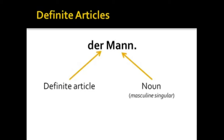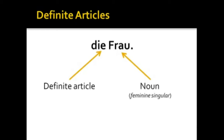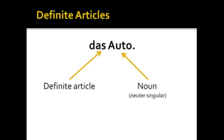We have the definite article 'der', which indicates the masculine gender of the noun. Since it's 'der Mann', we also know it's singular — so it's a masculine singular noun. Same thing with 'die Frau', or 'the woman' — the definite article tells us that the noun following it will be a feminine singular noun. And 'das Auto', or 'the car' — the definite article indicates that the noun following it will be a neuter singular noun.